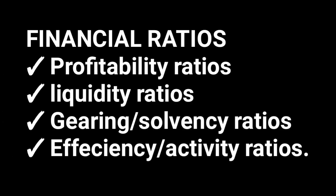We have mainly four types of financial ratios, and the first one is the profitability ratios. Profitability, as you hear it, is from the word profits. So these ratios are used to assess whether the business has succeeded in making an acceptable level of profits. Examples of profitability ratios include gross profit margin, net profit margin, return on equity, and return on capital employed. And those are the main four profitability ratios.